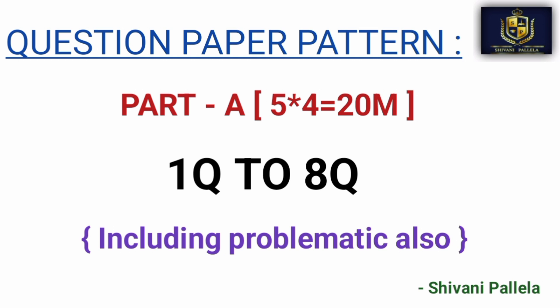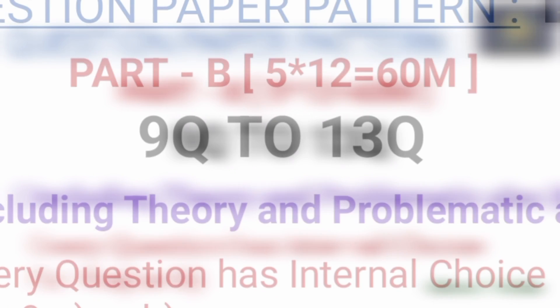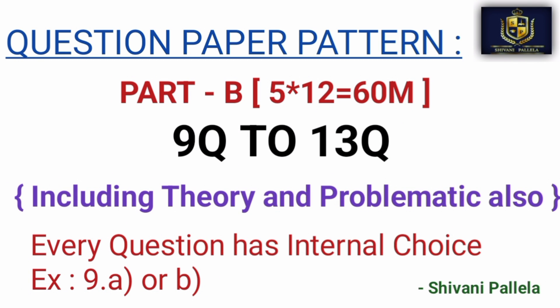I will share the video. So let me skip ahead — Part B consists of 60 marks, with 5 questions at the end, each carrying 12 marks. So from the 9th question to the 13th question, there are some units in theory and some units that are problematic. Theory and problematic questions are combined, and each question has an internal choice.